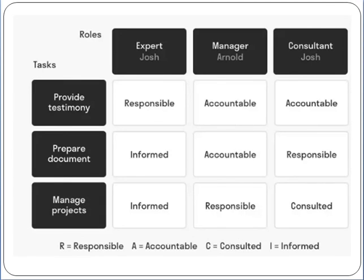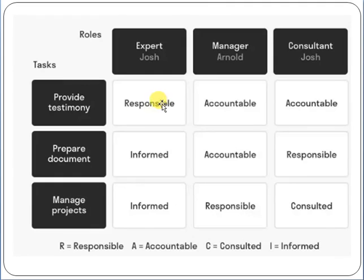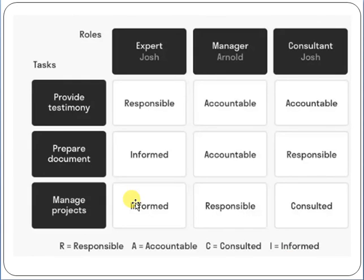Here is another example of a Responsibility Assignment Matrix. The task is 'Provide Testimony,' and the roles are Expert, Manager, and Consultant. The Expert is Responsible (R) for providing testimony, the Manager is Accountable (A) for that task, and the Consultant is marked C for Consulted. So R is Responsible, A is Accountable, C is Consulted, and I is Informed — that is another example of the Responsibility Assignment Matrix.